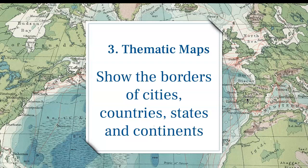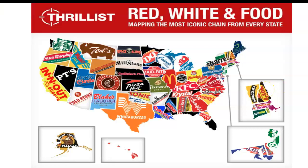Now, a thematic map. A thematic map does not show the borders of cities, countries, states, and continents. A thematic map shows something based on a theme. Here's a fun map — it shows the most iconic chain from every state. So in Nevada it's PT's, California it's In-N-Out, Cold Stone in Arizona, Whataburger in Texas, Starbucks for Washington. A thematic map doesn't necessarily have to do with geography, but it can. This thematic map is showing food.